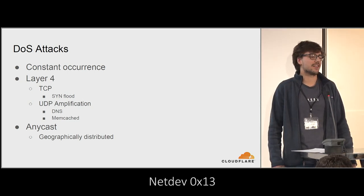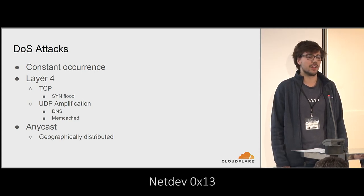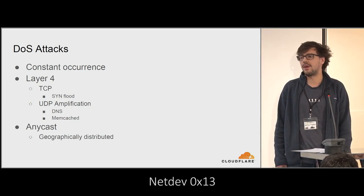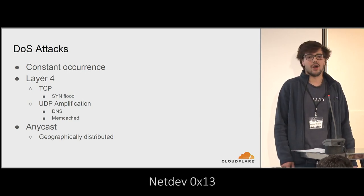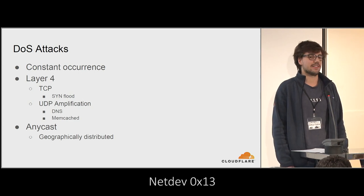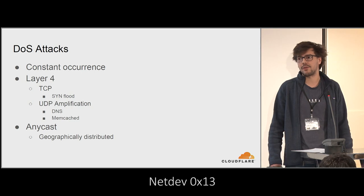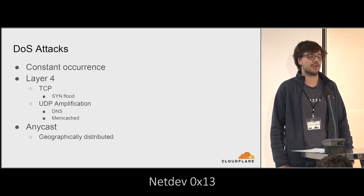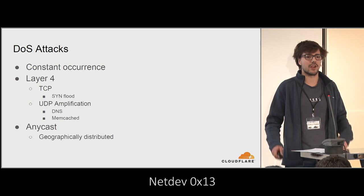The two major kinds of attacks we see over layer four are TCP flood attacks, where we get big floods of SYN or ACK packets, usually with a spoofed source address, or UDP amplification attacks — mainly either DNS or memcache, which we saw about a year ago when there was that big bug. One notable point is that we use Anycast everywhere, so all of our data centers advertise the exact same IP ranges. Distributed denial-of-service attacks tend to hit us in a very distributed way across most of our data centers.